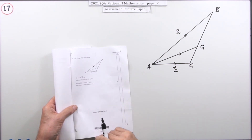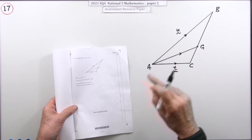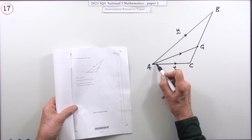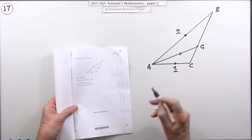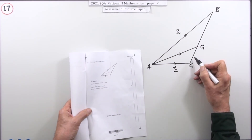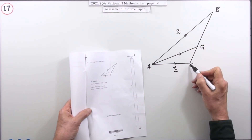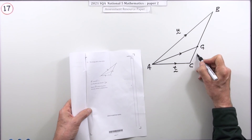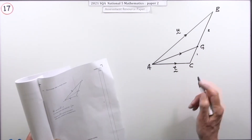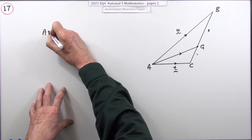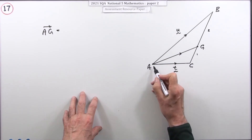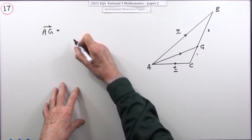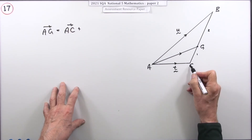Question 17, the last question, three marks. There's a diagram — it's a vector pathways question. You want the vector AG expressed in terms of u and t. One piece of information is that point G is one third of the way from C to B. To find AG, think about a pathway from A to G: go from A to C, then from C to G.